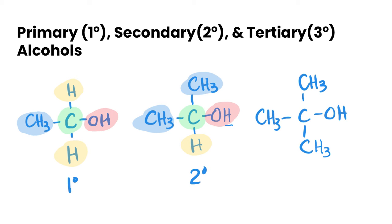Again, we're defining it based on what is attached to the carbon that is attached to the hydroxyl group. Looking at our last one, we've got our carbon attached to our hydroxyl group, and now there are three alkyl groups attached to that carbon and no hydrogens attached. Because there are three alkyl groups, this is called a tertiary alcohol.